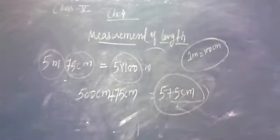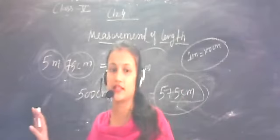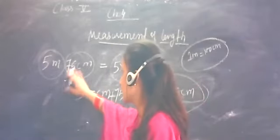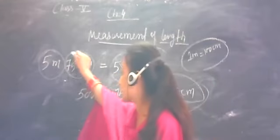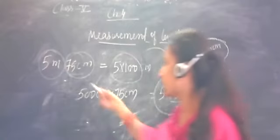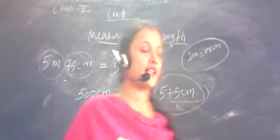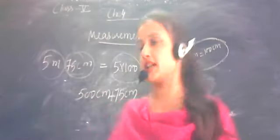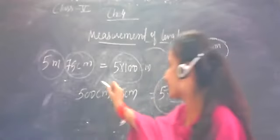Did you understand? The question was 5m and 75cm. We had to convert this into centimetres. The 75 cm was already in centimetres, so we kept it. We converted the meters into centimetres since 1 meter equals 100 cm. We multiplied 5 by 100 to get 500 cm.